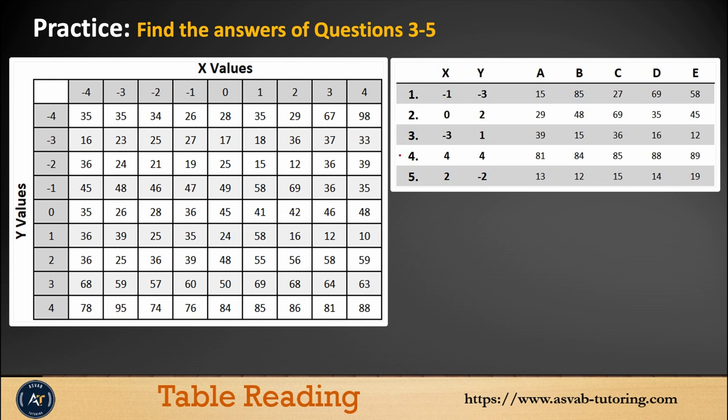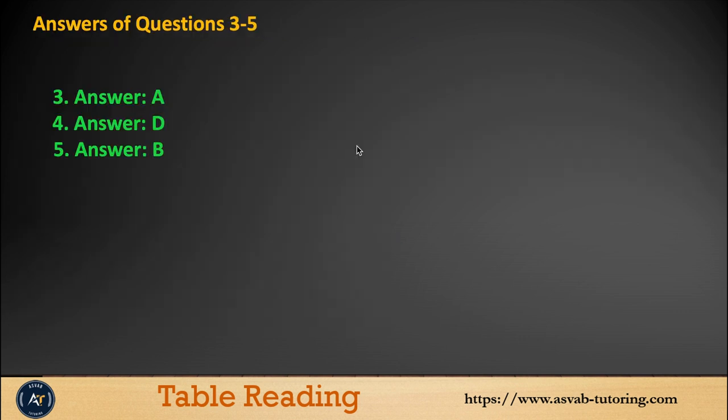Next is number 3. You could see here the intersecting point is negative 3 and 1. Use this information and find the correct answer. Questions 3, 4, and 5 answers: option A for number 3, D for number 4, and B for number 5. You could try by yourself.